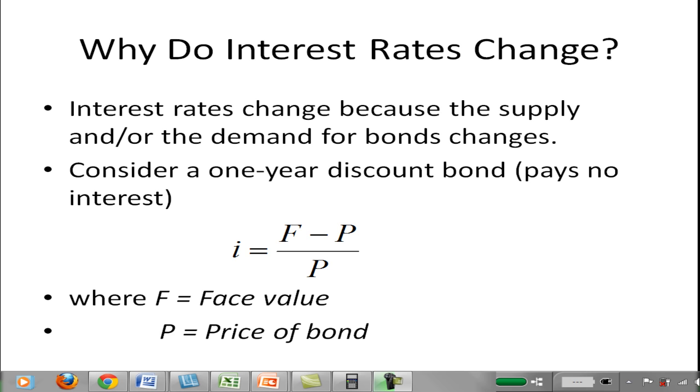Let's take a look at why interest rates change. Interest rates change because of changes in the supply and or the demand for bonds. One way to look at this is to consider a one-year discount bond. A discount bond is a bond that pays no interest, sometimes referred to as a zero coupon bond.